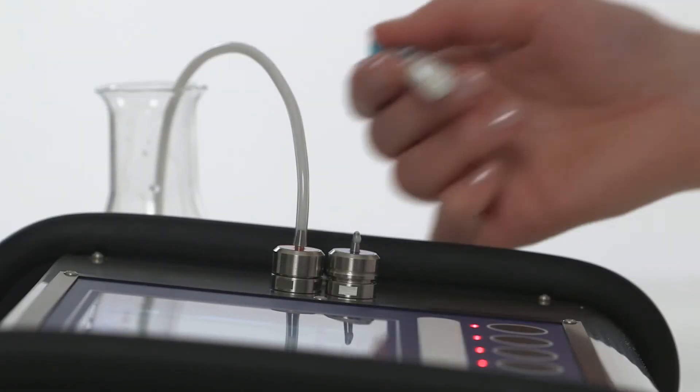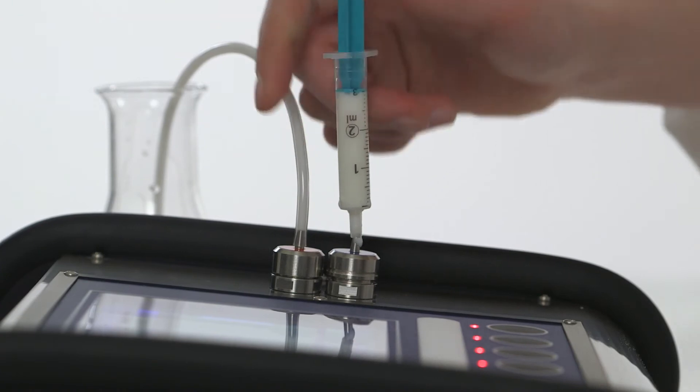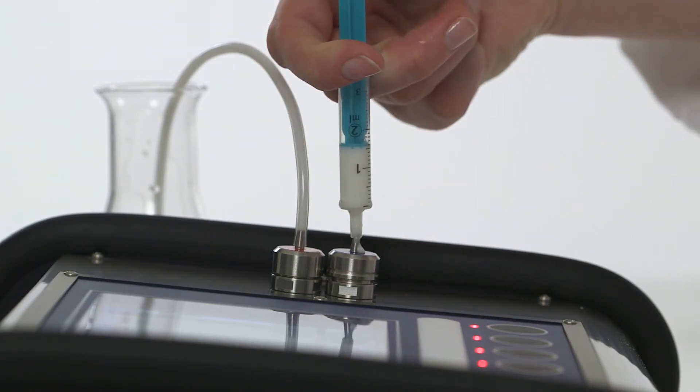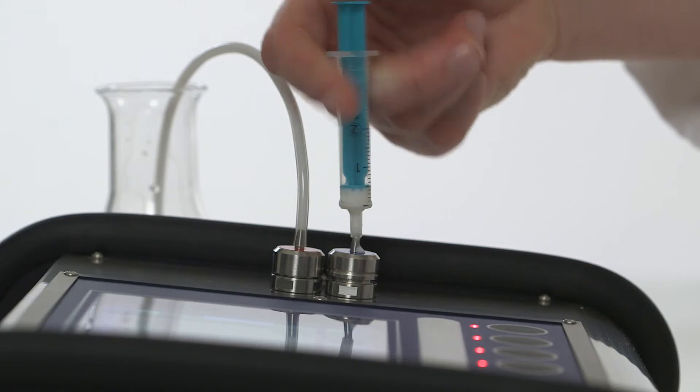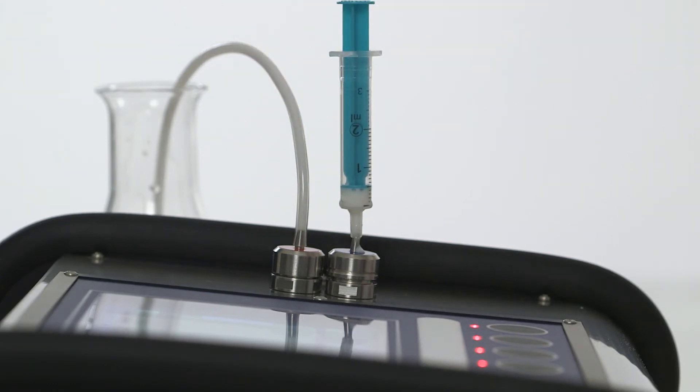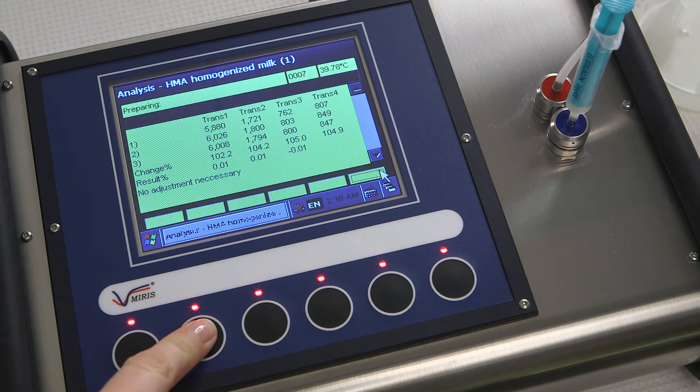To make a measurement, use a two milliliter syringe and inject at least one milliliter of sample into the blue inlet. Leave the syringe attached to the system. Press the start button.